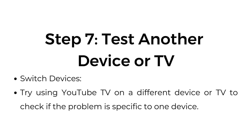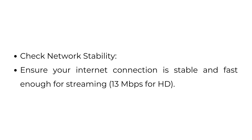Step 7: Test another device or TV. Switch devices and try using YouTube TV on a different device or TV to check if the problem is specific to one device. Check network stability and ensure your internet connection is stable and fast enough for streaming — 13 megabits per second for HD.